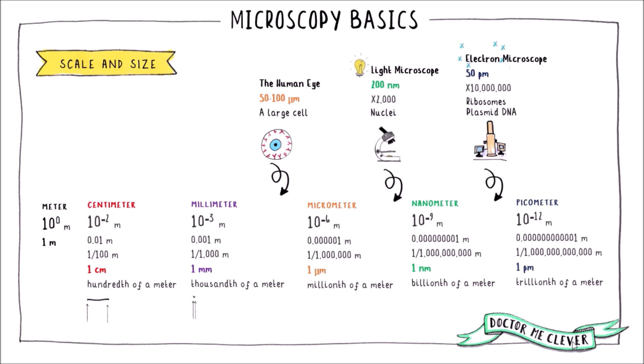Unbelievably though the very best electron microscopes can now distinguish between two points that are 50 picometres apart and can magnify an image up to 10 million times. Electron microscopes also allow us to see inside organelles and even visualise small subcellular structures such as ribosomes, plasmid DNA and pathogens such as viruses.